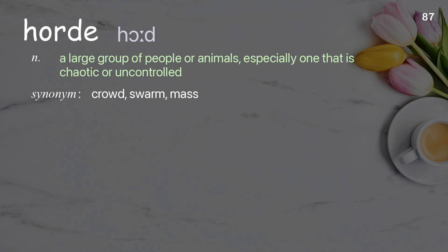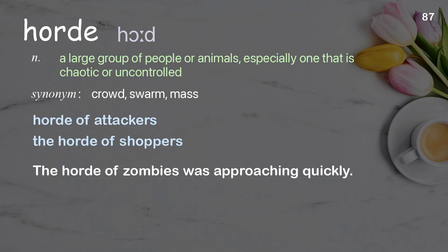Horde: a large group of people or animals, especially one that is chaotic or uncontrolled. Examples: horde of attackers; the horde of shoppers. The horde of zombies was approaching quickly.